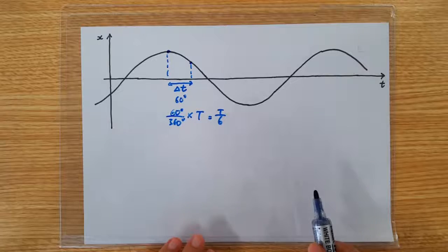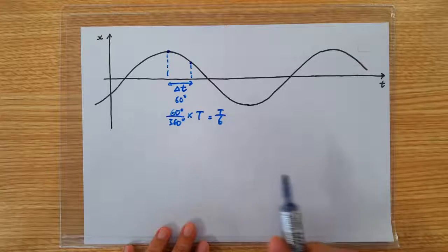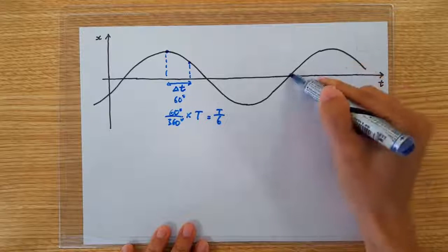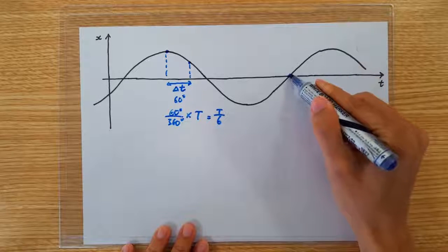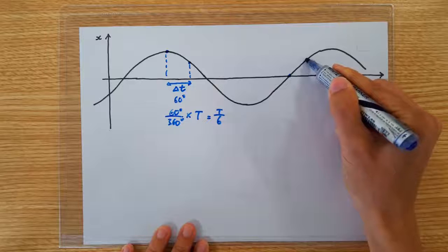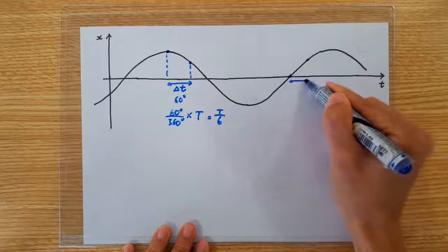Similarly, if you are interested in figuring out how long it takes for it to go from the equilibrium position to half its amplitude, so it's going from here to somewhere here. So this is the time we are interested in.